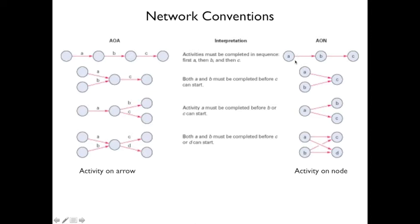In these network diagrams: A must be done before B, which must be done before C. Or A and B both have to be done before you can start C. Or you have to do A before you can start both B and C. A more complex example: you have to do A and B before you can start both C and D. Those are different networking conventions.